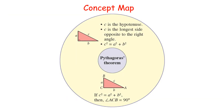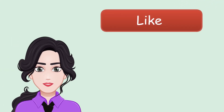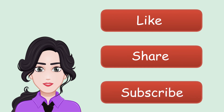The concept map of Form 1 Chapter 13, the final chapter, is as below. If you find this video helpful, don't forget to like, share, and subscribe to our channel. And if you have any questions, you can comment below. Thanks for watching.